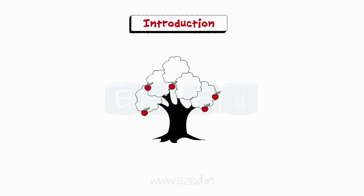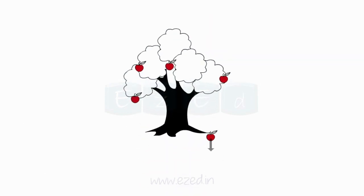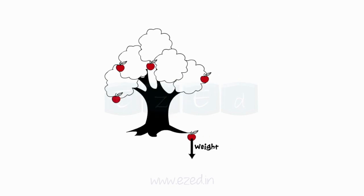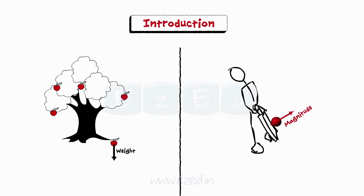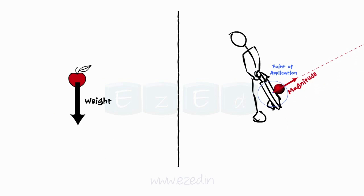We have learnt that every mass-containing body is attracted to the center of the earth due to gravity. This is also called as the weight of the body. In introduction to engineering mechanics, we also learned that any force can be completely defined when all its characteristics are specified. One of the characteristics is the point of application. The weight of a body, being a force, must also act through a point on the body. This point of application is termed as the center of gravity.